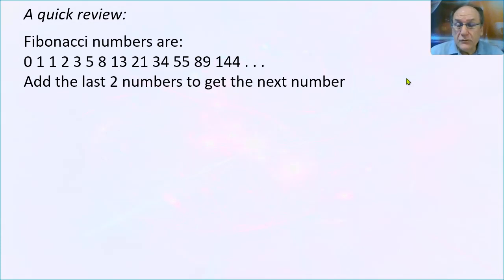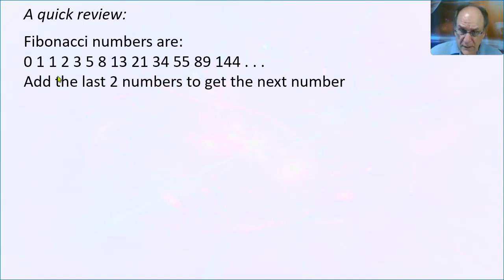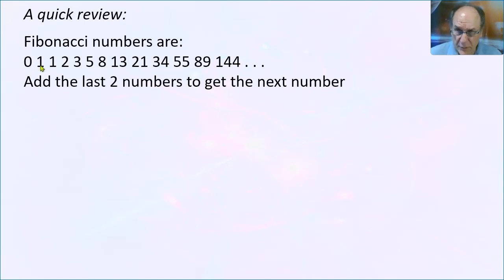First of all, the Fibonacci numbers — you're probably familiar with them. I'm showing the first ones on the slide here. The Fibonacci numbers start with 0 and 1, and then you add the last two numbers to get the next number. So 0 plus 1 is 1, 1 plus 1 is 2, 1 plus 2 is 3, 2 plus 3 is 5, 3 plus 5 is 8, 5 plus 8 is 13, and so on.